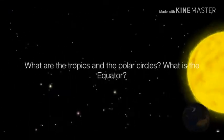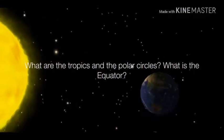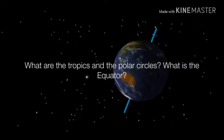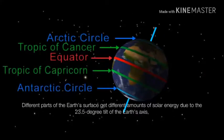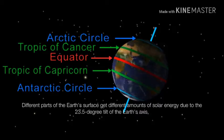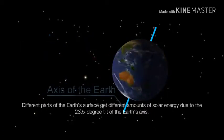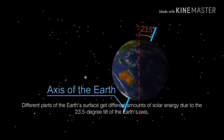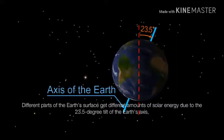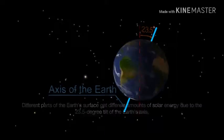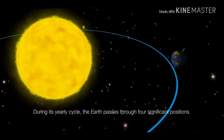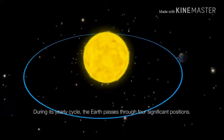What are the major circles of latitude? What are the tropics and the polar circles? What is the equator? Different parts of the earth's surface get different amounts of solar energy due to the twenty-three-and-a-half degree tilt of the earth's axis. During its yearly cycle, the earth passes through four significant positions.